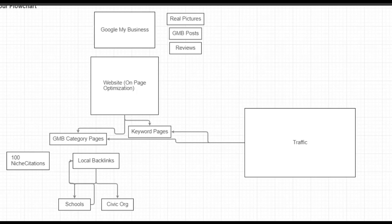Then you create other pages on your website using the other GMB categories you've set up in Google My Business. Any time you pick a GMB category, you need a corresponding page on your website for that category. I personally don't like to pick more than five categories — I think if you pick more than five you water it down, but that's just my opinion. So for a lawyer, the primary GMB category might be criminal defense attorney, then civil attorney, then trial lawyer — I'd pick five GMB categories total.